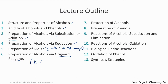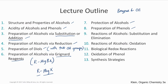We'll also cover Grignard reagents — compounds with a magnesium halide (RMgX) attached to a carbon chain — protection of alcohols, and preparation of phenols, which are combinations of a benzene ring and an OH group.